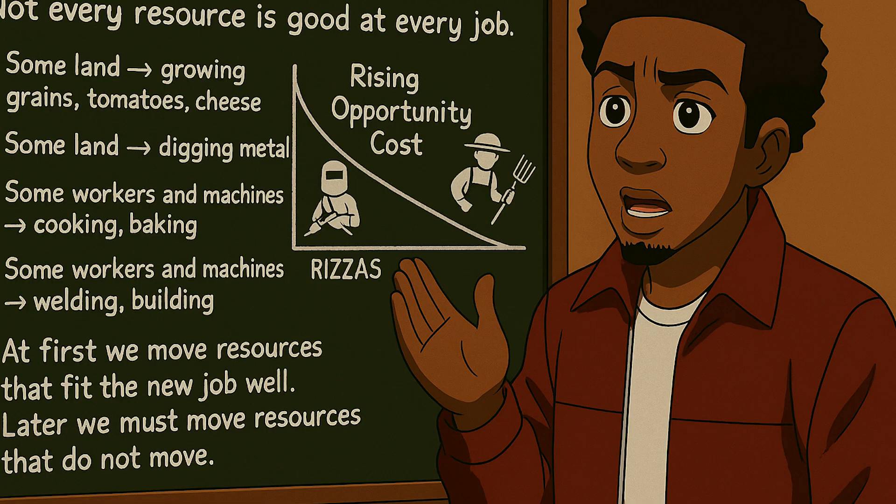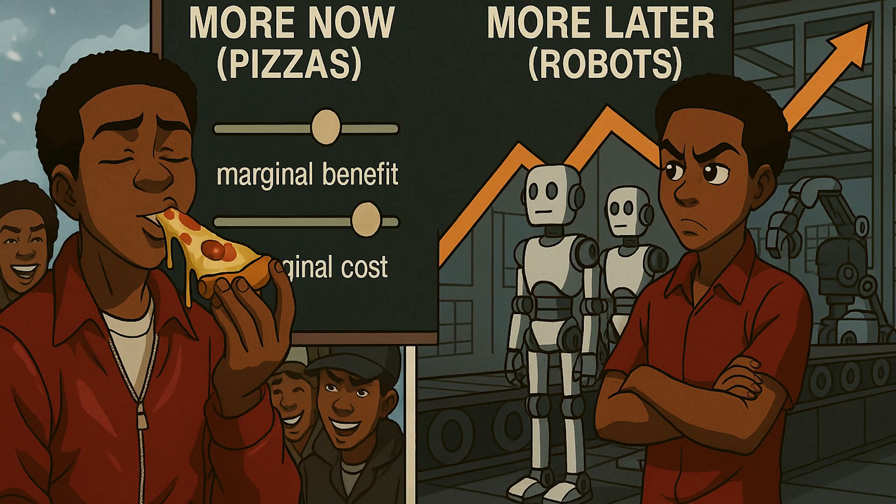Second, better quality resources: education and training raise worker skills, and health improvements make workers more productive. Third, better technology: new methods like smart software that schedules production allow more output with the same input. When these factors improve, the country can make more pizzas and more robots at the same time. That larger potential output is economic growth, and it raises living standards if the new capacity is actually used.